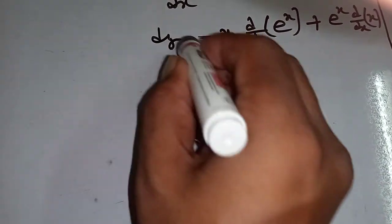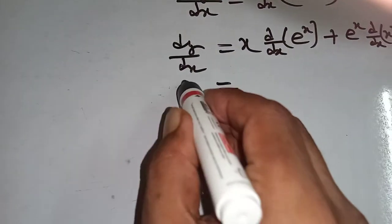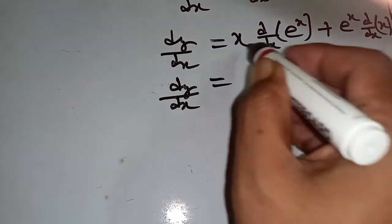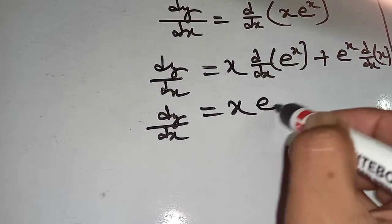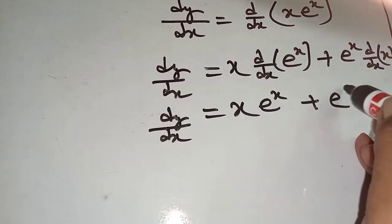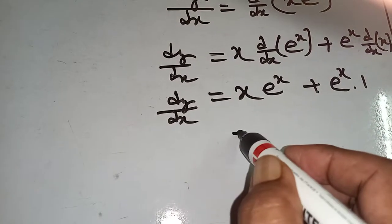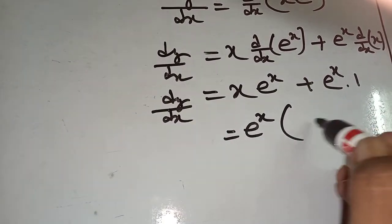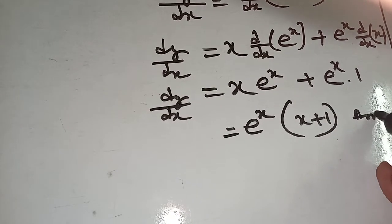So dy/dx equals x times d/dx of e to the power x, which is e to the power x, plus e to the power x times d/dx of x, which is 1. Now take e to the power x as common, giving e to the power x times (x plus 1). This is the answer.